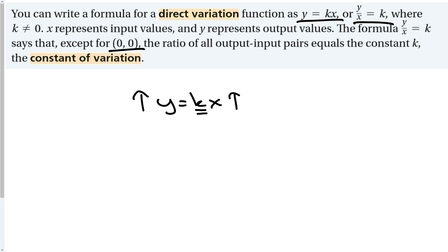Except for (0,0), because if you take y divided by x for (0,0), that's undefined. So we're going to ignore that one, but any other input-output pair, if we take the output divided by the input, we're going to get the constant, as long as we have direct variation.